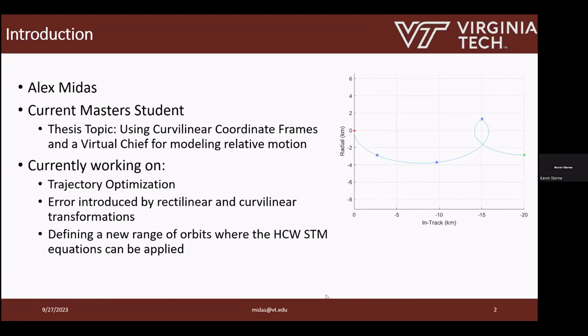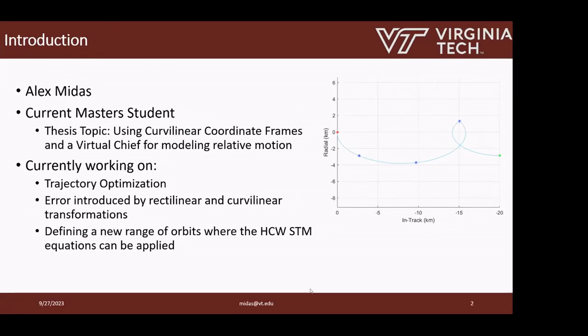Through my time in the graduate program, I've been working on rendezvous proximity operations — RPOs — doing trajectory optimization in that frame and trying to develop that. While I was doing that, I started looking at the frames we use to describe relative motion. I was finding that if we transform relative states I get from trajectory optimization problems back into the ECI frame, I get orbits that weren't making sense. That's kind of how all of this started: looking at why that's happening, what's causing it, and how do we fix it.